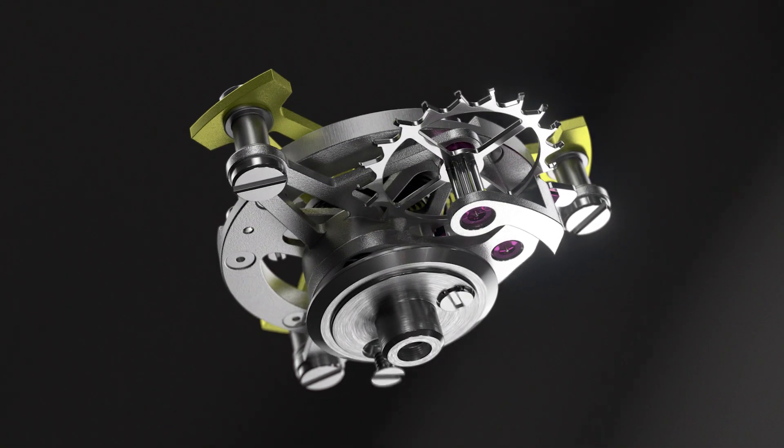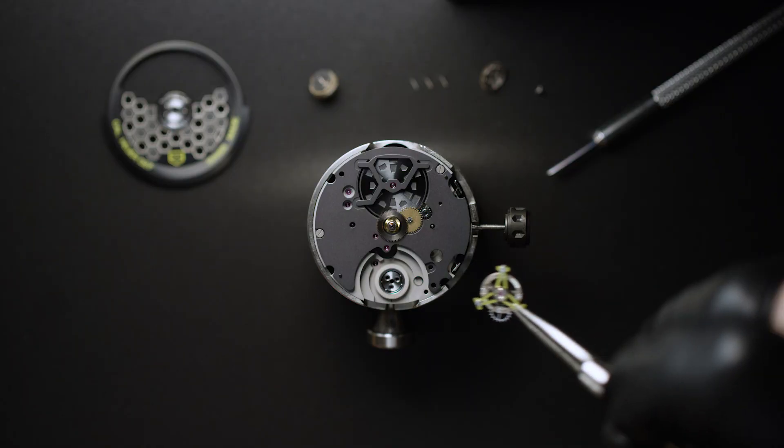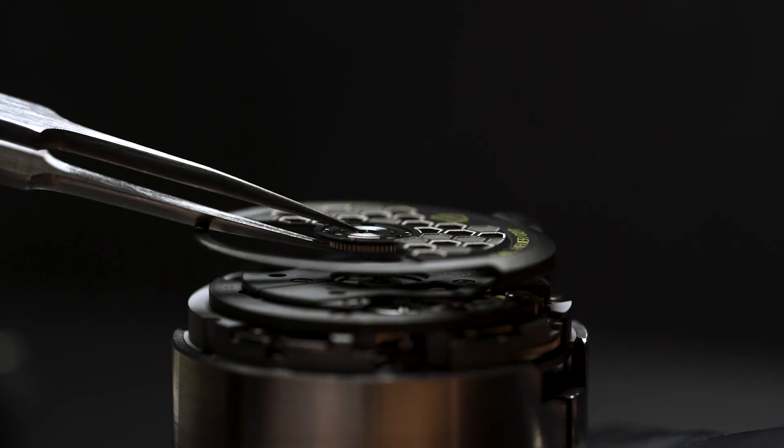Matched to an aluminum balance wheel with white gold inserts, the carbon composite hairspring is integrated into a next-generation Tourbillon.